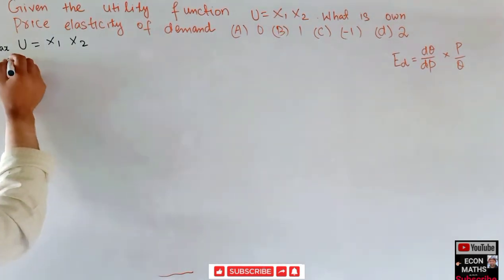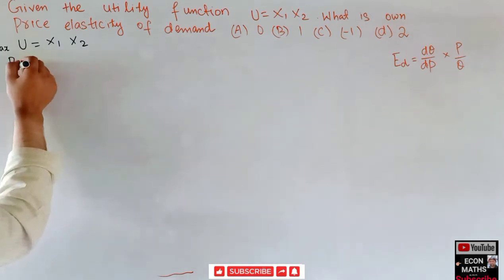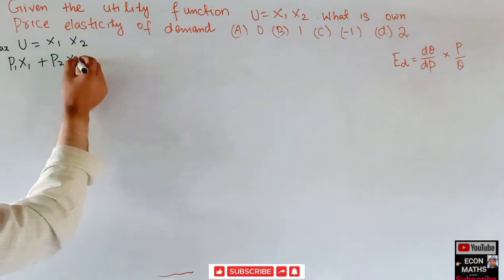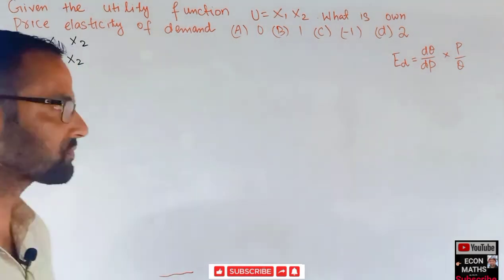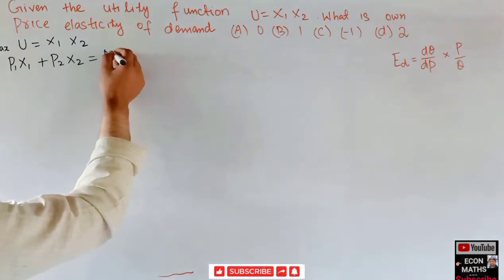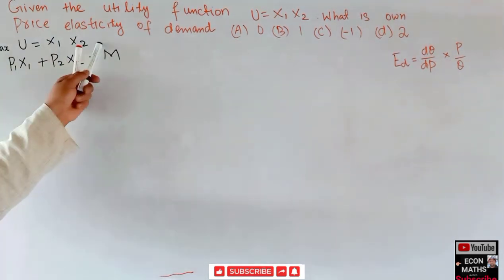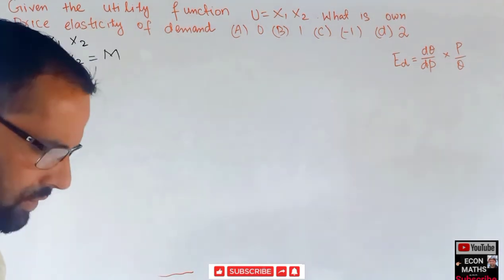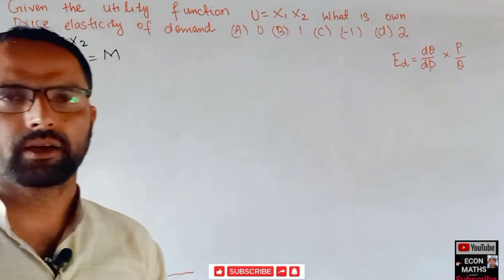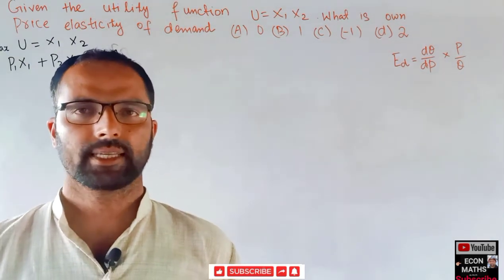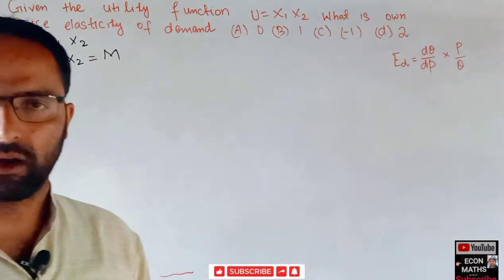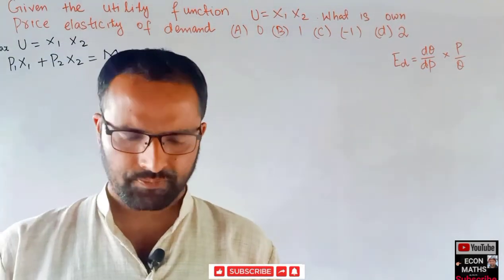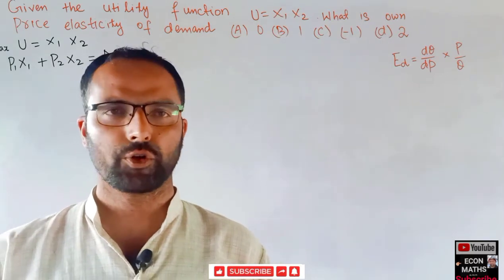Our budget constraint will be price of good 1 times quantity of good 1, that is p1*x1, plus price of good 2 times quantity of good 2, that is x2, should be equal to our budget m. We will directly use the tangency condition, that is the utility maximization condition. We can also use the Lagrange method, but it is suitable to use the direct method — the first order condition for utility maximization.